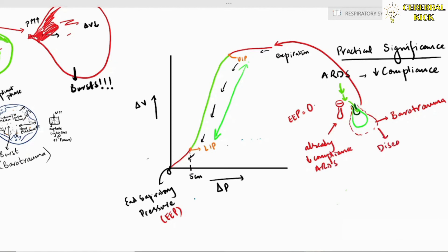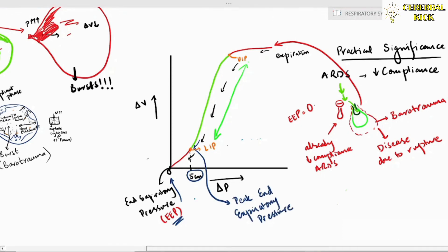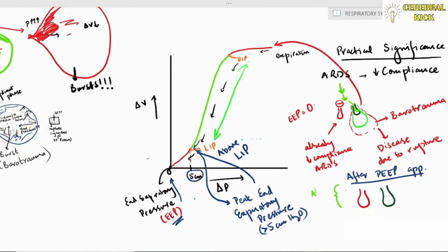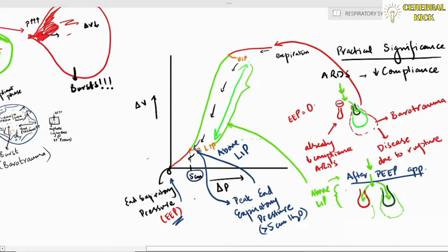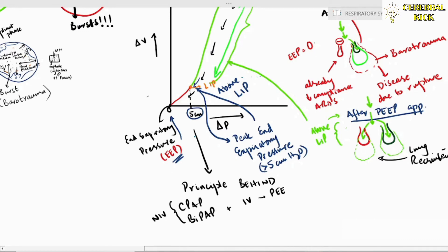To prevent this, we keep end-expiratory pressure above 5 centimeters of water — this is called positive end-expiratory pressure (PEEP). With PEEP applied, both diseased and healthy alveoli remain above the lower inflection point in the green zone. Flow distributes uniformly, barotrauma is avoided in the healthy lung, and the diseased lung is recruited for the next breath. This is the principle behind CPAP, BiPAP, and PEEP in invasive ventilation, all of which reduce pressure changes and improve lung compliance.